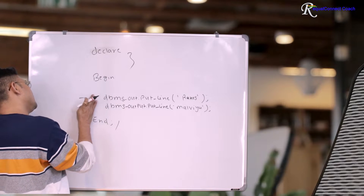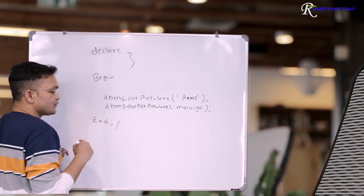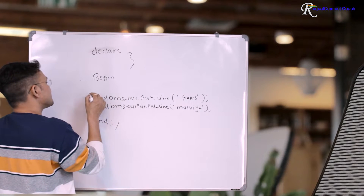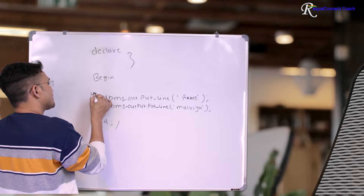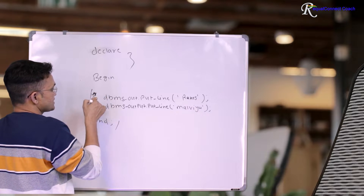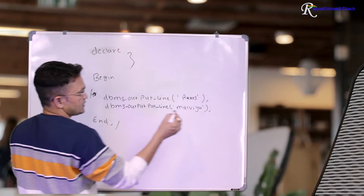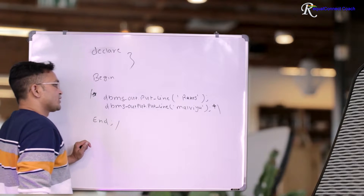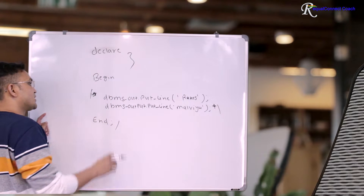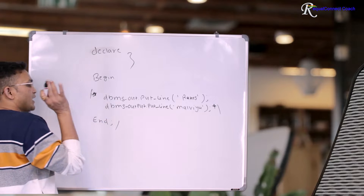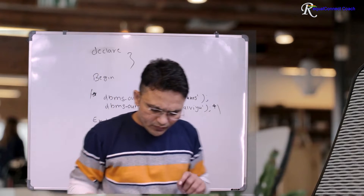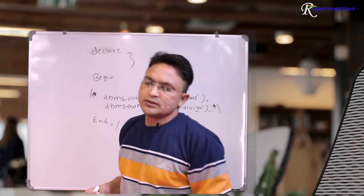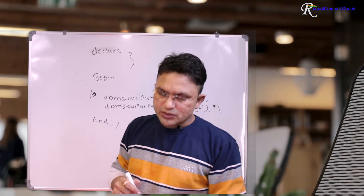Now if you want to do a multi-line comment, you can use the slash-asterisk syntax — just like other programming languages — to comment out multiple lines. That is how you can comment out multiple lines in your PL/SQL program.